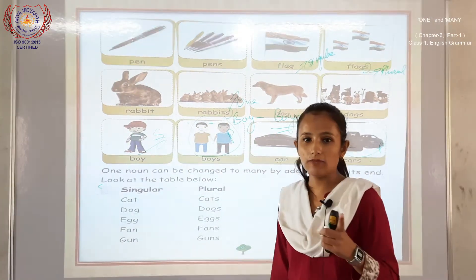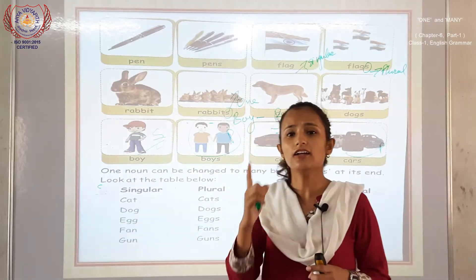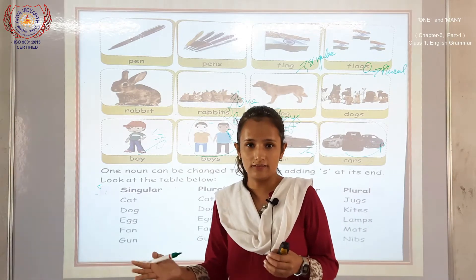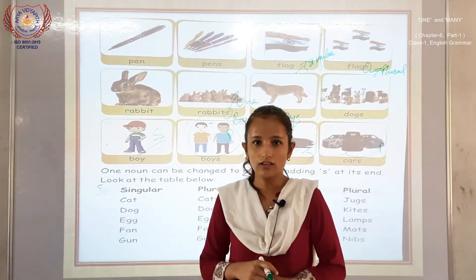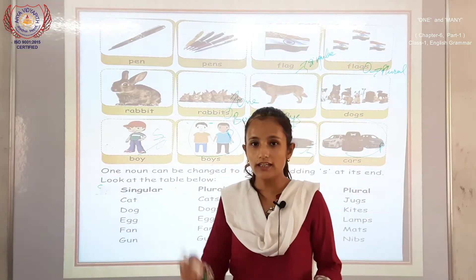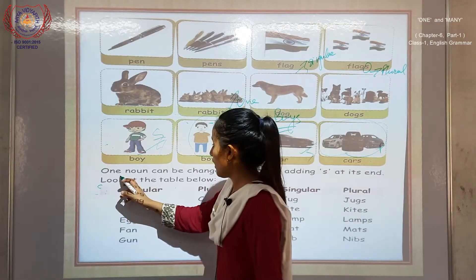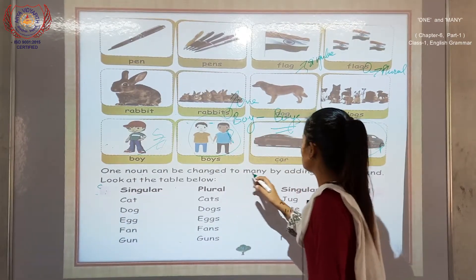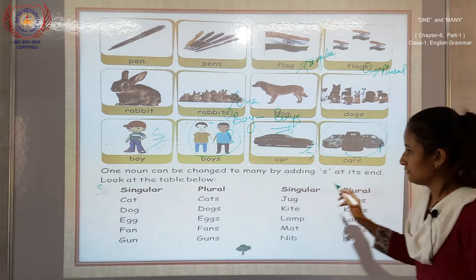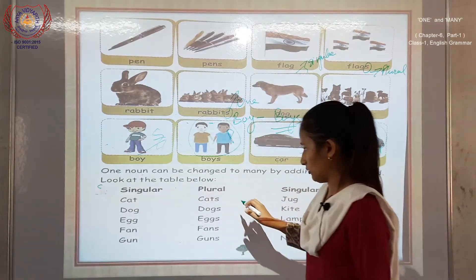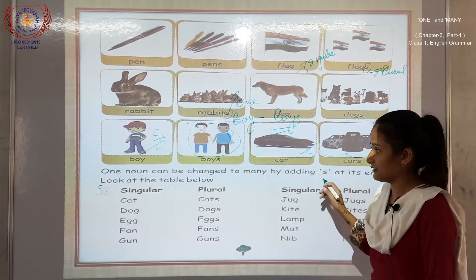Ek ko ham log singular bolte hain — one is singular. And one or more than two or three — what we call plural. One noun can be changed to many by adding S at its end. Look at the table below.